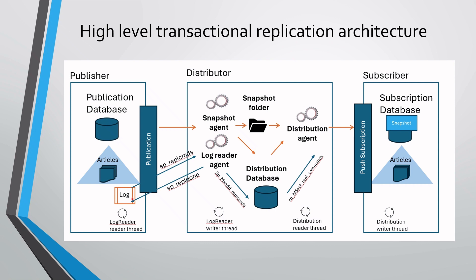After replicated data comes to the distribution database, the distribution agent reader thread uses the MSget_repl_commands stored procedure and scans new commands to be replicated. Then the replicated data is put to a queue and the distribution agent's write thread goes to the queue and brings the data to the subscription database.